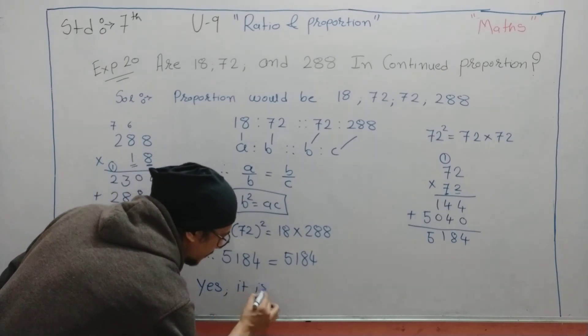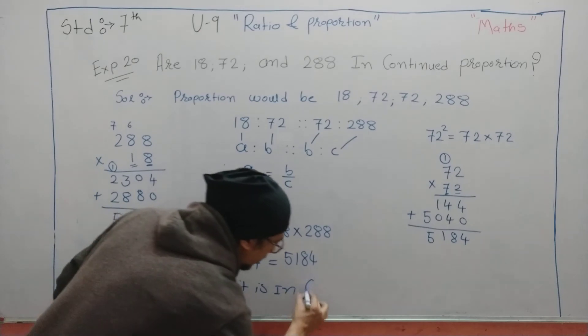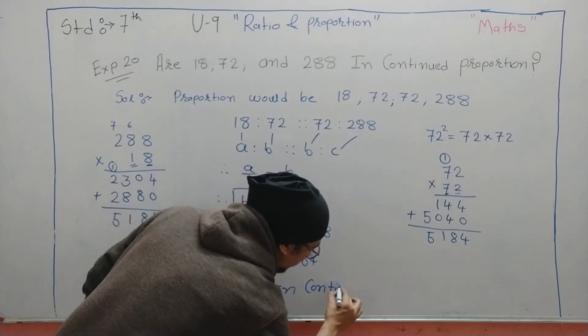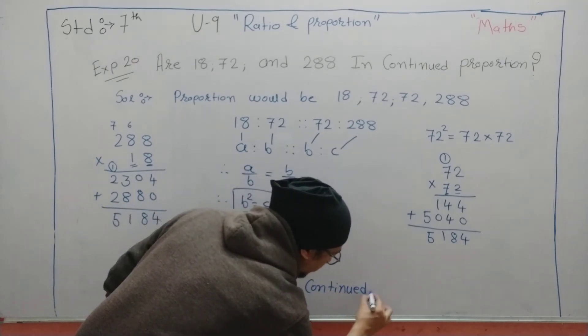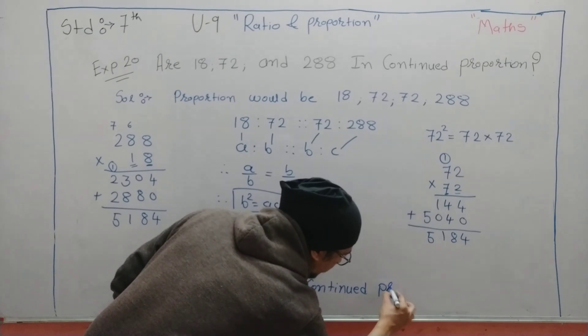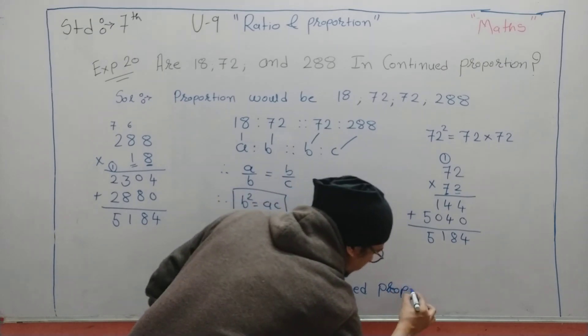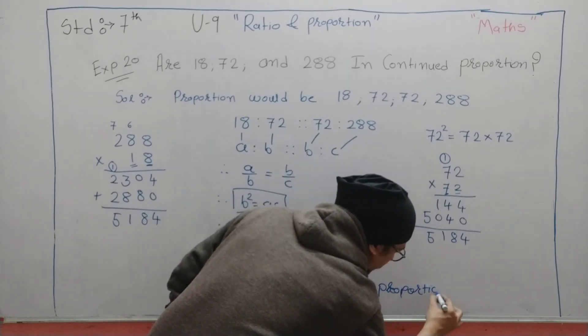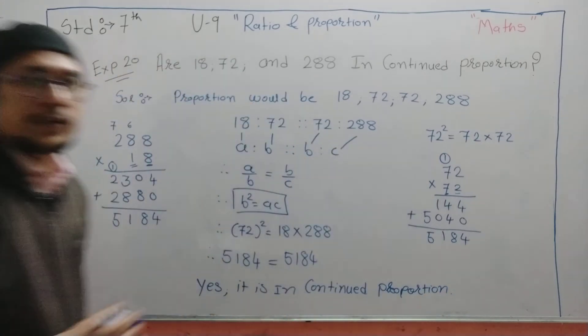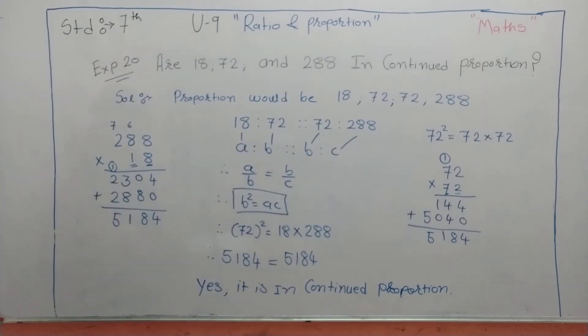Since LHS becomes RHS, LHS equals RHS. That means yes, they are in proportion. Yes, it is in continued proportion. Done. So pause the video, write the solution. I am giving you similar kind of problem for homework.